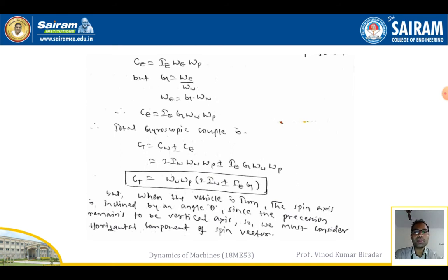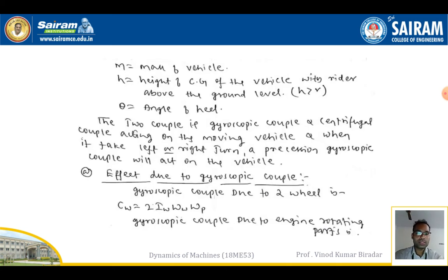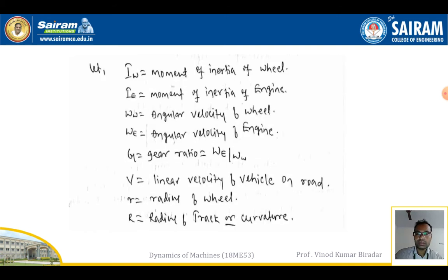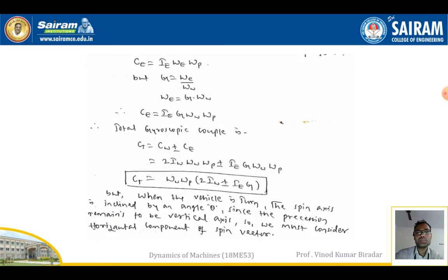For the engine rotating parts, Ce = Ie·ωe·ωp. We know the gear ratio G = ωe/ωw, therefore the angular velocity of the engine is ωe = G·ωw. Substituting this value, the gyroscope couple due to the engine becomes: Ce = Ie·G·ωw·ωp.